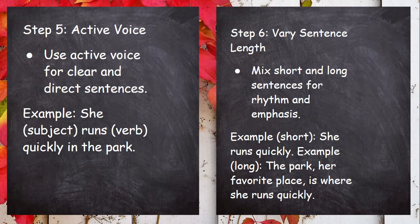Step 5: Focus on the active voice. Use active voice for clear and direct sentences. Here is an example: she is the subject, runs is the verb, and we add another detail — quickly in the park. So we took a simple sentence and added a detail to it: She runs quickly in the park.